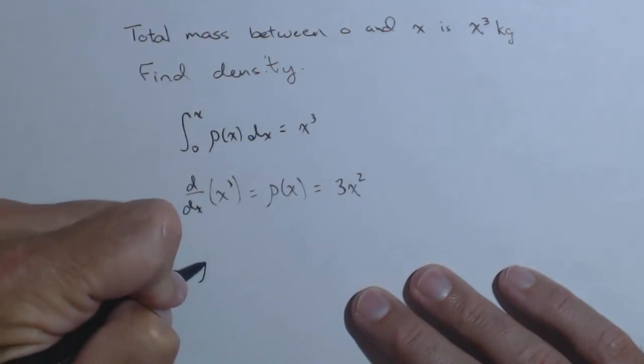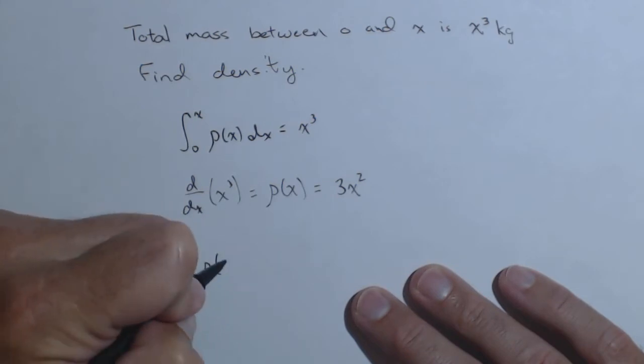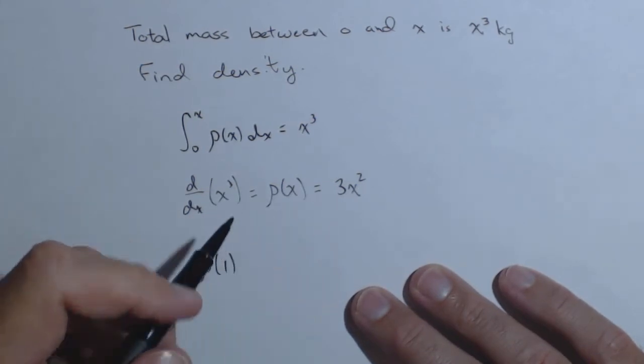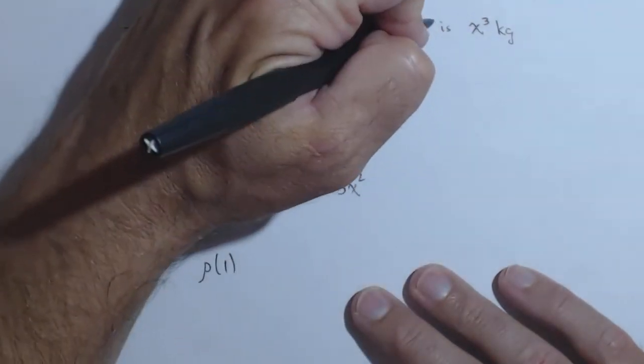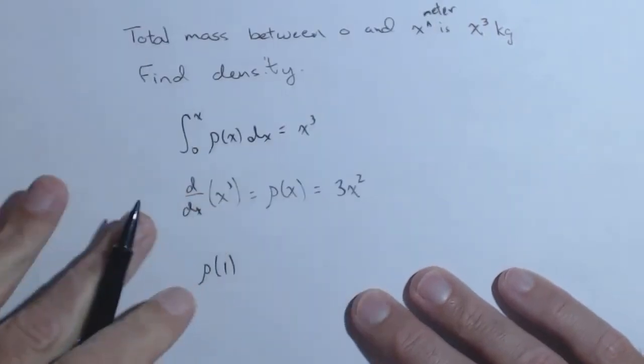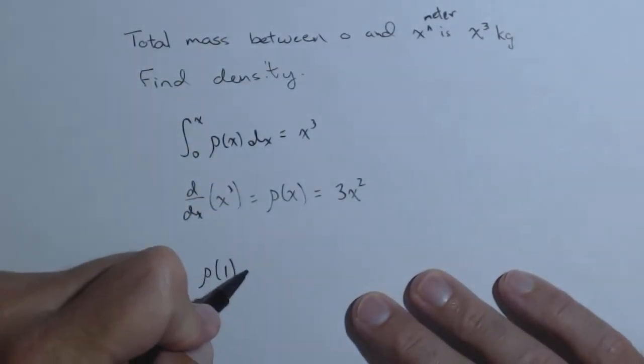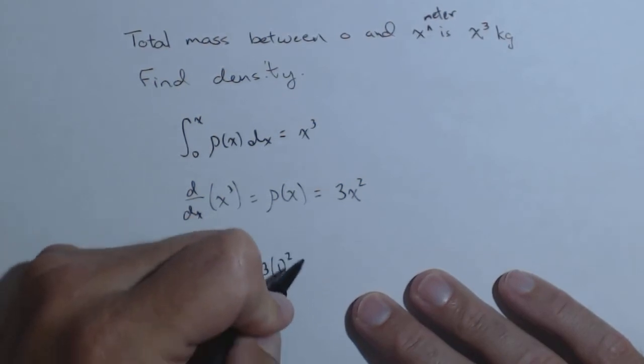Now if we want to find the density of the rod at one unit, we need to specify units. Let's say 0 and x are in meters. So the density at one meter is going to be 3 times 1 squared.